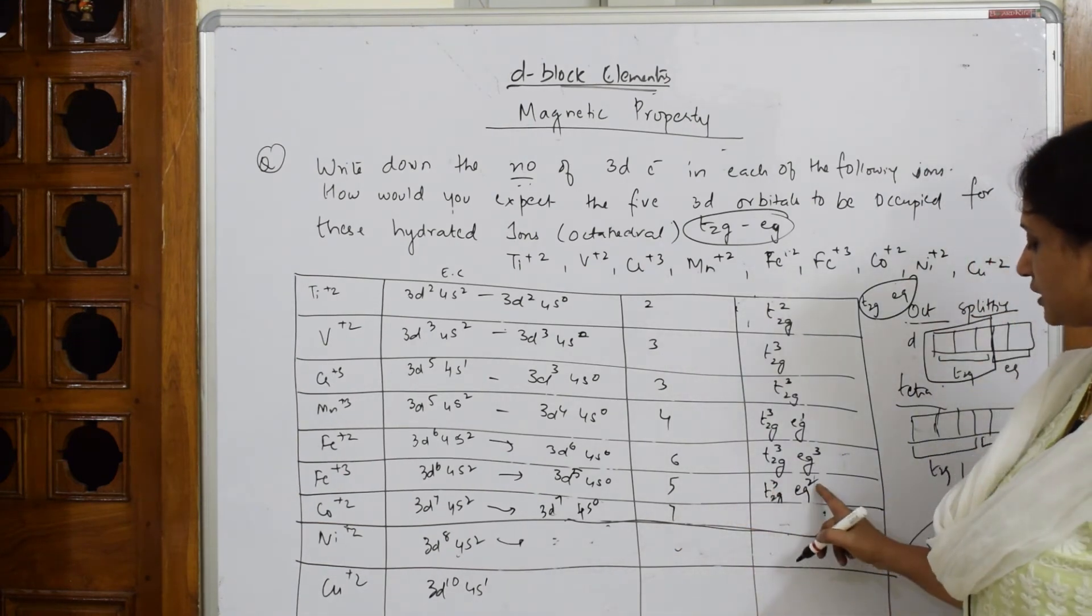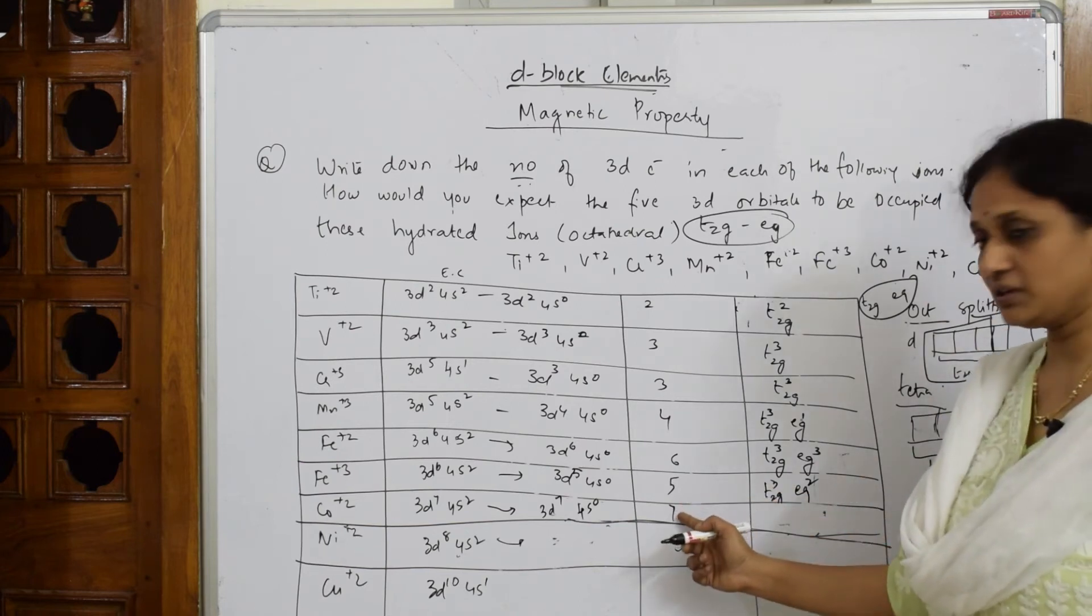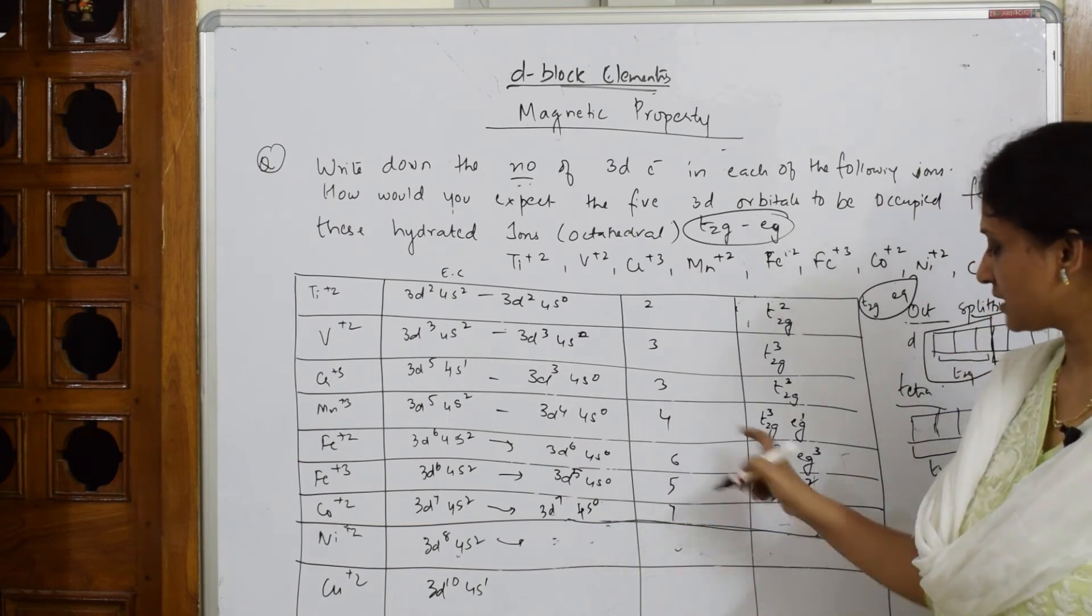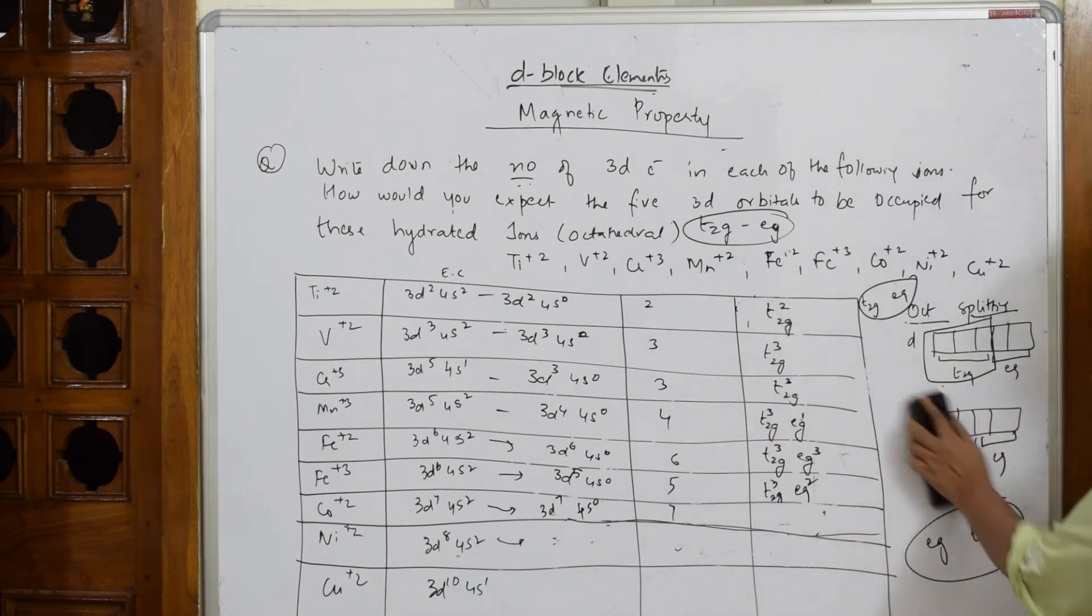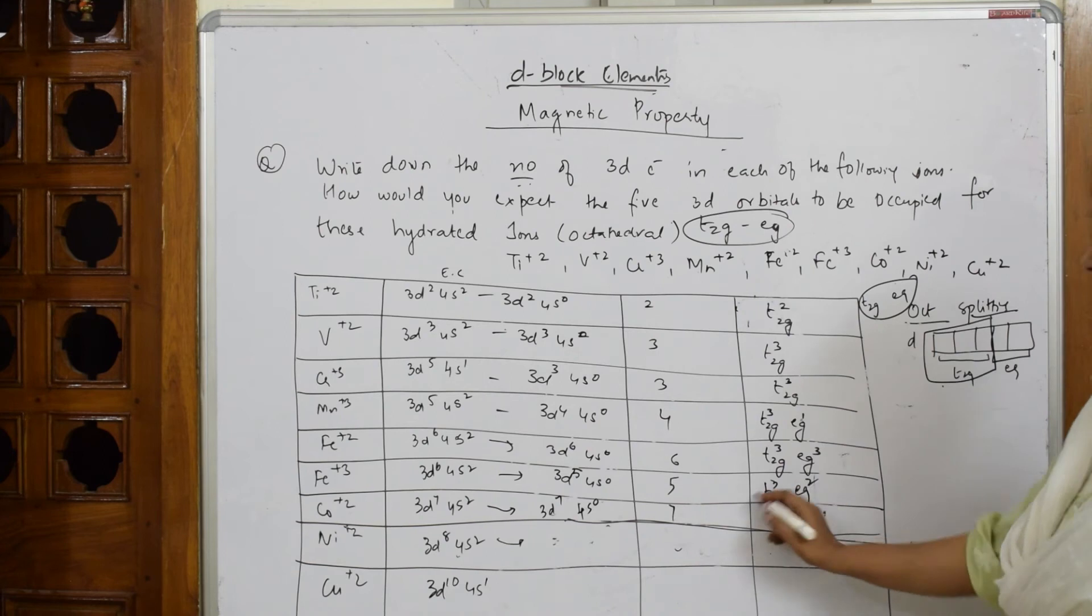Now, careful. Here what happened? Now, you have filled 3 here. Then you have filled 2 here. Done. Now, it started pairing up. Yes. Now, how is this pairing up done? Yes. Till here. Okay. This is 5.